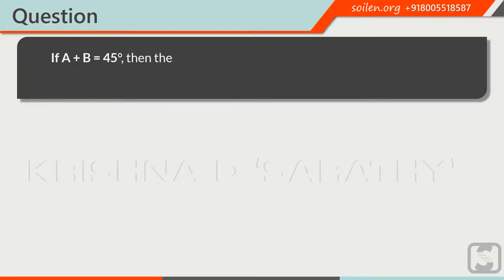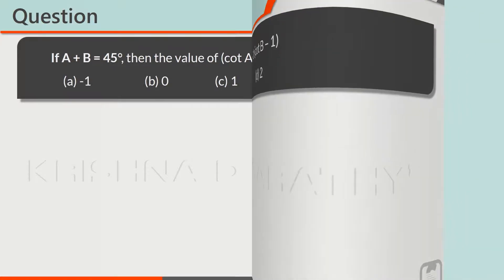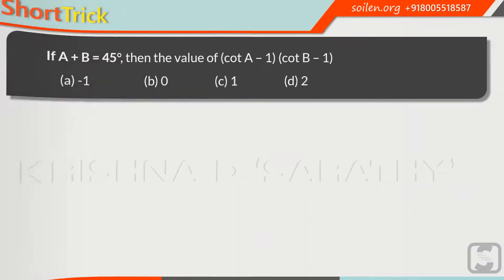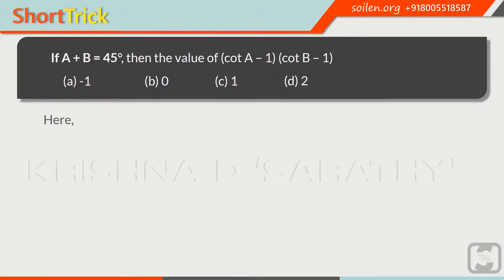The question is given here: if a plus b is equal to 45 degrees, then find the value of cotangent of a minus 1 times cotangent of b minus 1. Let's solve this question with a short trick. Here, a plus b equals 45 degrees, so we can take a equal to 30 degrees and b equal to 15 degrees.